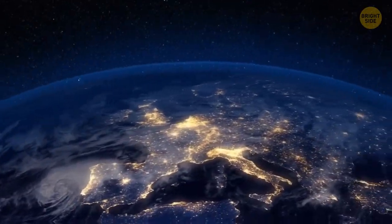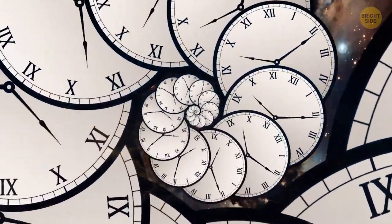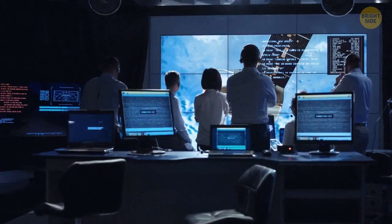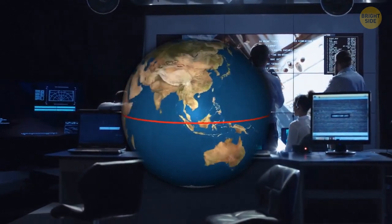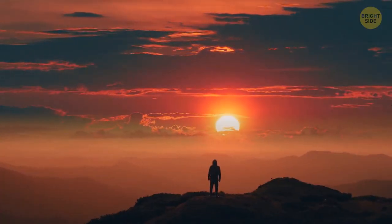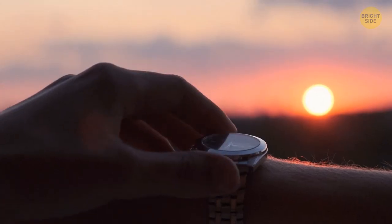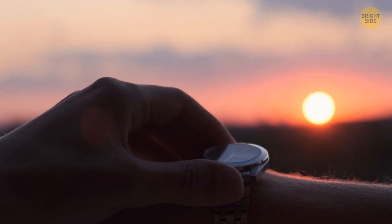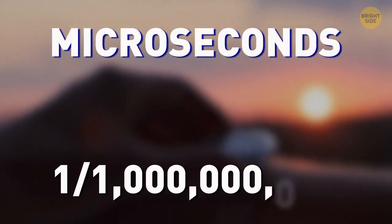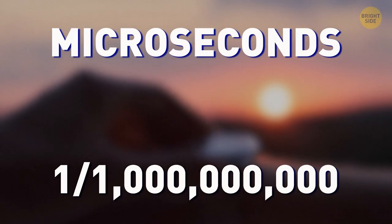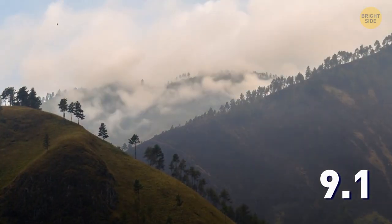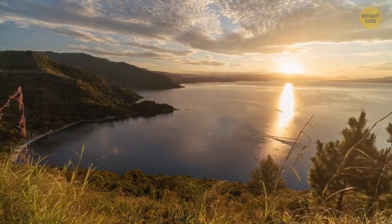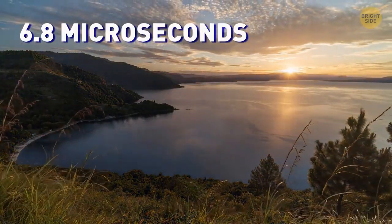A mega-earthquake can actually shorten the length of a day for the entire planet. NASA claims that really large earthquakes can shift our planet's axis and, thus, change the duration of a day. Now, of course, you won't notice it since this change is measured in microseconds and one microsecond is one millionth of a second. Scientists think that the 9.1 Sumatra earthquake, which occurred in 2004, shortened the day by 6.8 microseconds.